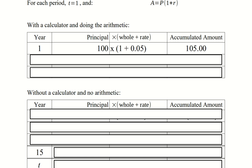We're going to use our calculator and do some arithmetic. In the first year, at the beginning of the first year, we have $100 invested. Over the course of the year it earns 5% interest, and the 1 reminds us that we get our $100 back as well. So at the end of that year, we've got $105.